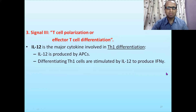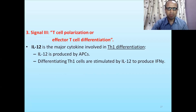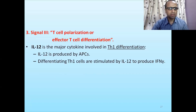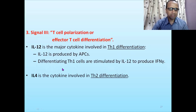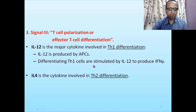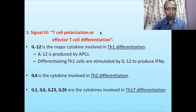During the activation of CD4-positive T-lymphocytes, cytokines synthesized by the antigen-presenting cell provide the third signal. If the APC produces interleukin-12, then the CD4-positive T-lymphocytes will be induced to become type 1 helper cells. If the cytokine produced by APC is interleukin-4, then the CD4-positive T-lymphocytes will be induced to become type 2 helper cells. This process is called T-cell polarization or effector T-cell differentiation.